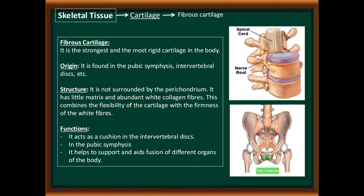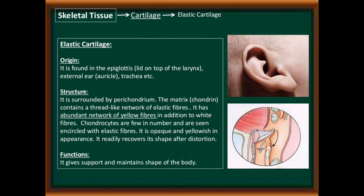Third: elastic cartilage. It is found in the epiglottis — on top of the larynx — external ear, trachea, etc. It is surrounded by perichondrium. The matrix contains a thread-like network of elastic fibers, with an abundant network of yellow fibers in addition to white fibers. Chondrocytes are few in number and are seen encircled by elastic fibers. It is opaque and yellowish in appearance.